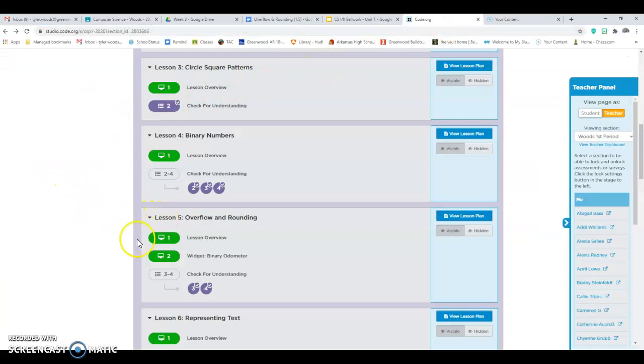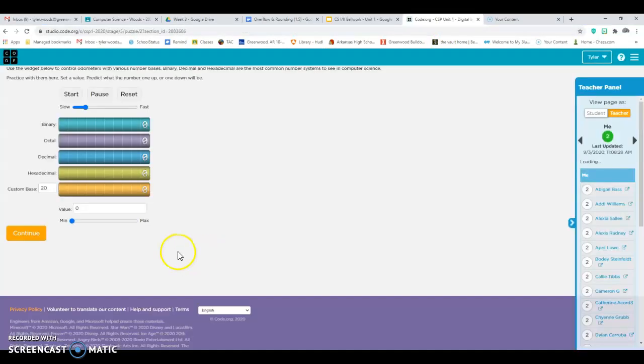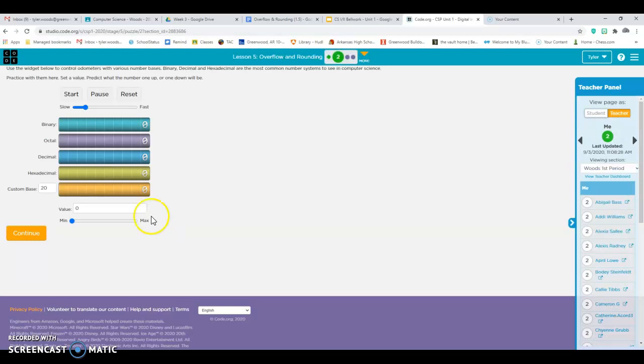So if I'm in code.org, I go to overflow and rounding, I click on widget, the binary odometer, and basically what you're going to do is you're going to start it right here. Just hit the button that starts it, and we're watching it run. And these are all the different systems. And like I said, there's plenty more systems than this, but these are the main systems. We'll be using the binary decimal, hexadecimal. So you can see down here the value is going up, and we could keep going on the max value.